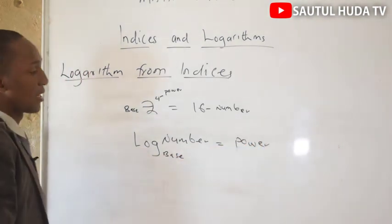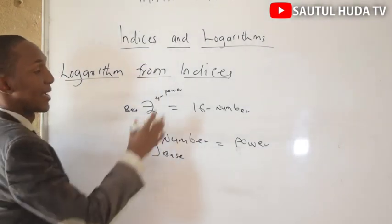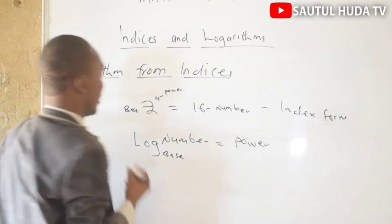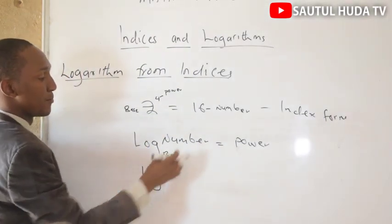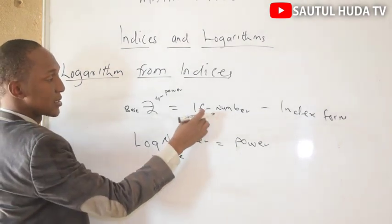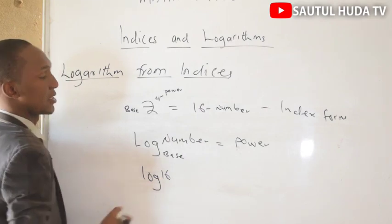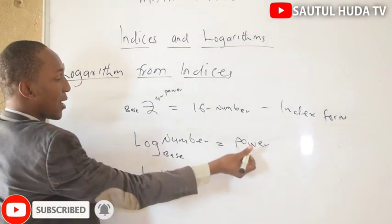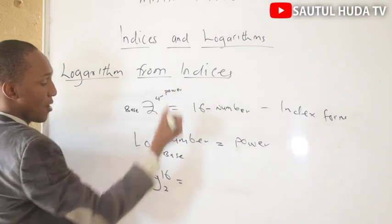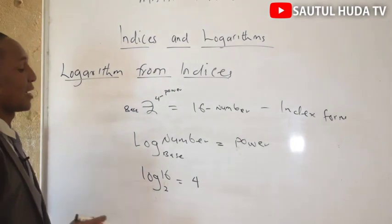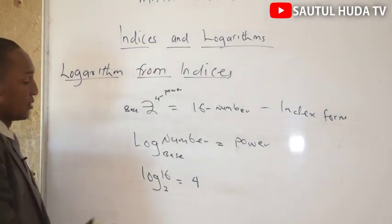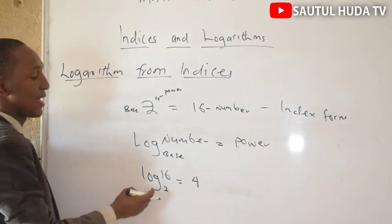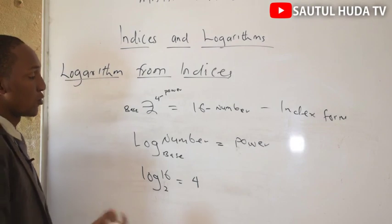From this index form we can convert to logarithm form or log form. According to the definition we gave, log of the number - log 16 - then base we take from the index form, base is 2, equals to power. We take the power from the index form, power is 4. So this is the hint for converting index form to logarithm form.